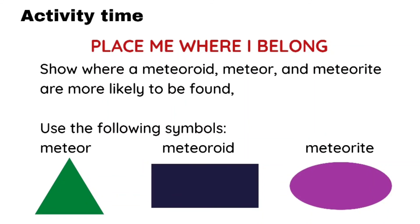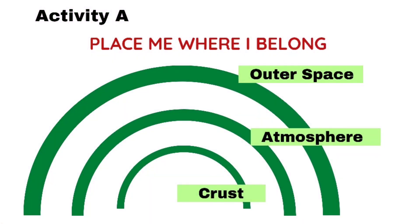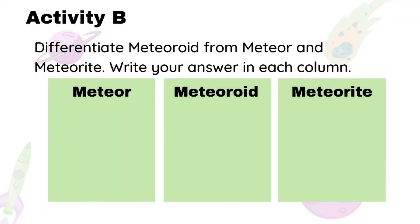Before we end our lesson, let's answer this activity: Place me where I belong. Show where a meteoroid, meteor, and meteorite are more likely to be found, using the following symbols — a green triangle for meteorite, a green triangle for meteor, a blue rectangle for meteoroid, and a purple oval for meteorite. For activity A, place the right symbol in the place where it belongs. For activity B, differentiate meteoroid from meteor and meteorite, and write your answer in each column.